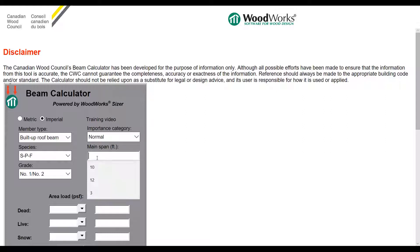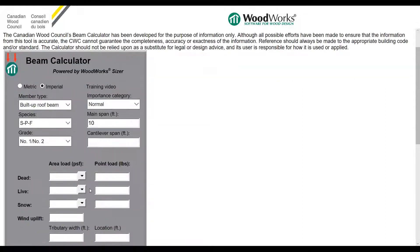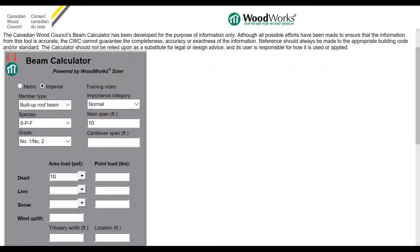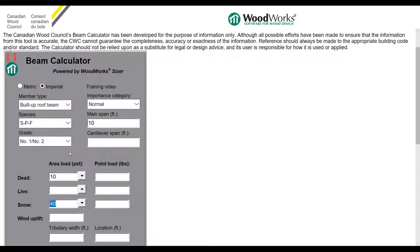Let's input the main span as 10 feet and leave the cantilever span as blank. The next step is to input loads. You can input loads as area load and point load. For dead load, let's select 10 pounds per square foot from the drop-down and apply 40 pounds per square foot for snow load. Wind is where you could add additional wind uplift — here I'm going to leave it as blank.